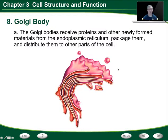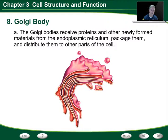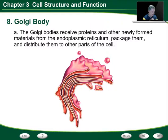Then we have the Golgi body, also known as the Golgi apparatus. The Golgi body receives proteins and other materials that come from the endoplasmic reticulum, and then packages them. Think of it like an assembly line: you build a product, and then someone packages it correctly. The Golgi bodies receive that information, reform it, package it, and distribute it to other parts of the cell — a vital structure that gets those proteins shaped and packaged as they should be.